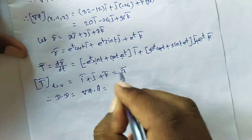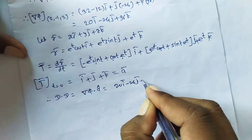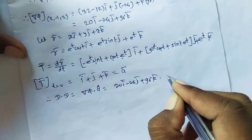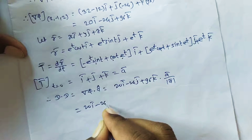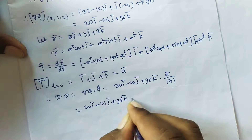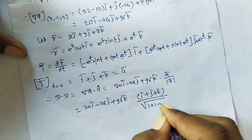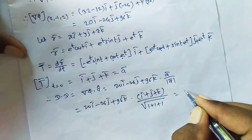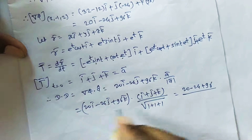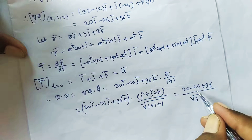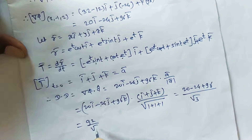Now DD = ∇φ · â = (20î − 24ĵ + 96k̂) · (î + ĵ + k̂) / √(1² + 1² + 1²). The dot product gives 20 − 24 + 96 = 92, divided by √3. So the answer is 92/√3.